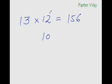12 is at the distance of plus 2 from 10. And 13 is at the distance of plus 3 from the base 10. Now, to get the first two digits of your answer, all you need to do is add these numbers in a cross manner. 3 plus 12 is 15 or 13 plus 2 is 15. Either way, you will get the same answer. So you are not likely to go wrong here.